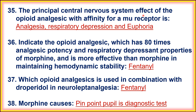The principal CNS effect of opioid analgesics with affinity for the mu receptor — such as morphine — when it binds to the mu receptor, produces analgesia, respiratory depression, and euphoria. Fentanyl has 80 times the analgesic potency and respiratory depression property of morphine and is more effective than morphine in maintaining hemodynamic stability. Which opioid analgesic is used in combination with droperidol in neuroleptanalgesia? That is fentanyl. Morphine causes pinpoint pupils, which is a diagnostic sign of morphine overdose. Thanks for watching.